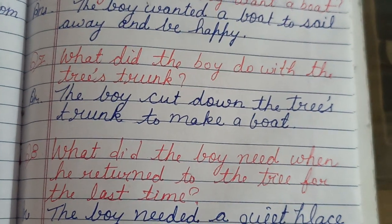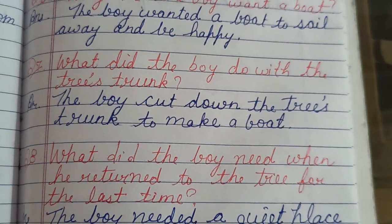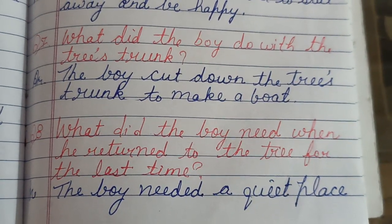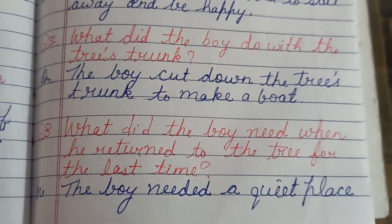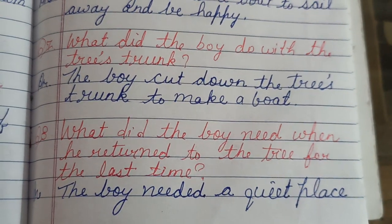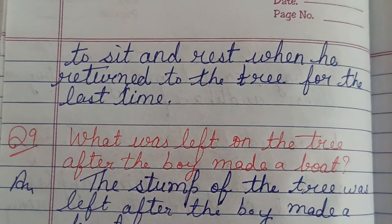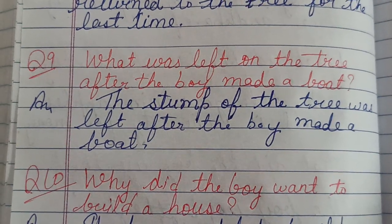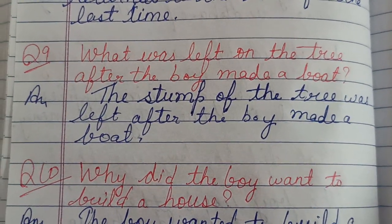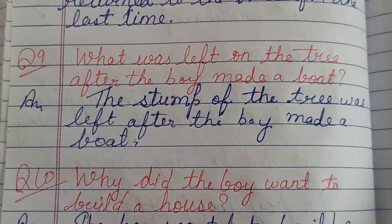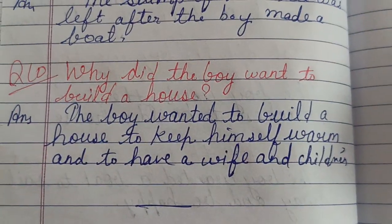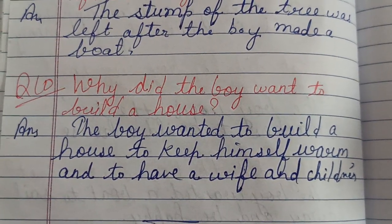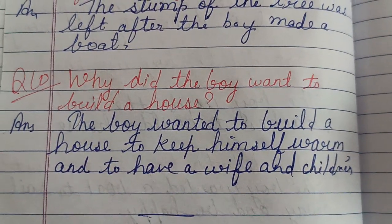Question seven: what did the boy do with the tree's trunk? The boy cut down the tree's trunk to make a boat. Question eight: what did the boy need when he returned to the tree for the last time? The boy needed a quiet place to sit and rest. Question nine: what was left on the tree after the boy made a boat? The stump of the tree was left after the boy made a boat. Question ten: why did the boy want to build a house? The boy wanted to build a house to keep himself warm and to have a wife and children.